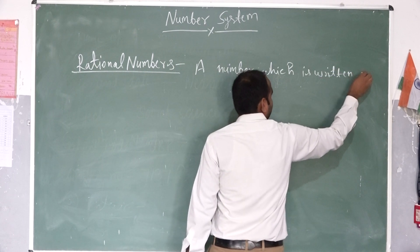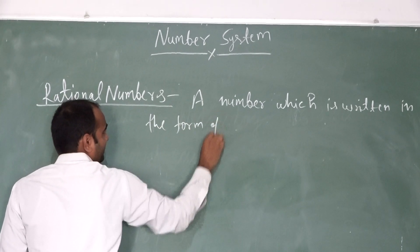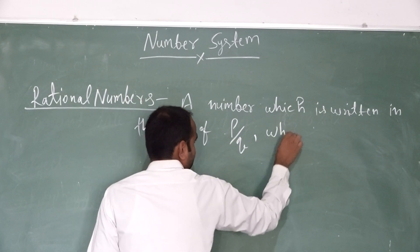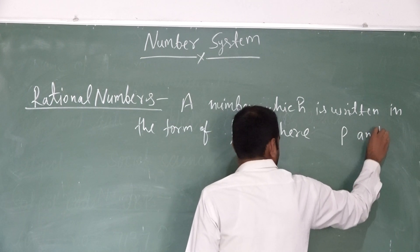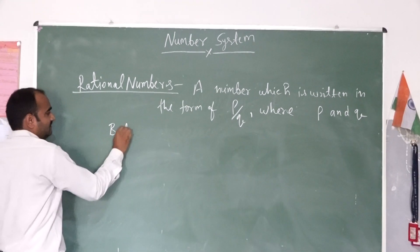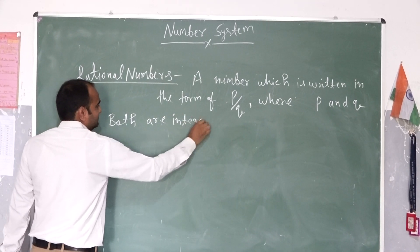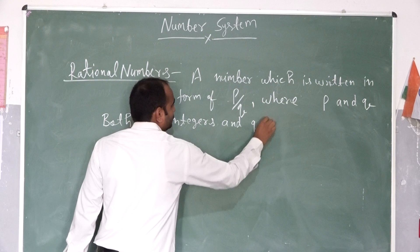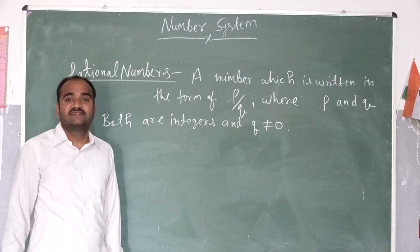A number which is written in the form of P by Q, where P and Q both are integers and Q is not equal to 0. This is the definition of rational numbers.